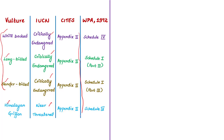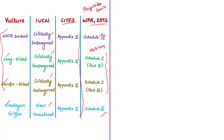All four vultures are classified under Appendix 2 of CITES — the Convention on International Trade in Endangered Species of Wild Fauna and Flora. Long-billed vulture and slender-billed vulture are protected under Schedule 1, Part 3 of the Wildlife Protection Act 1972. The white-backed vulture and Himalayan griffon vulture are protected under Schedule 4 of the Wildlife Protection Act 1972. All vultures belonging to the Accipitridae family, apart from long-billed, slender-billed, white-rumped, and Indian vulture, are protected under Schedule 4.